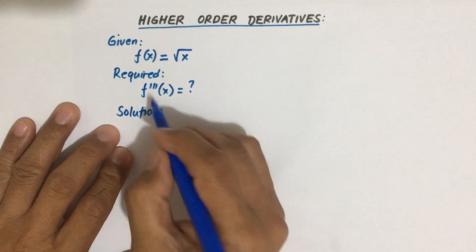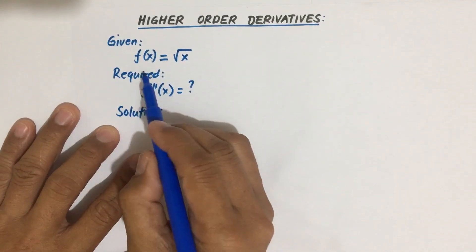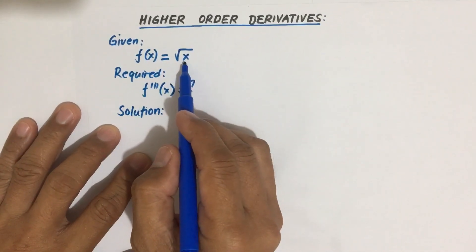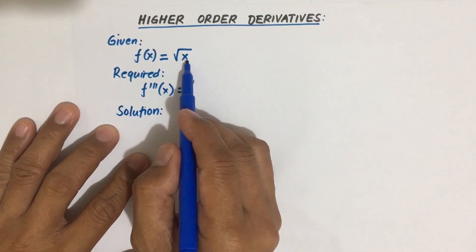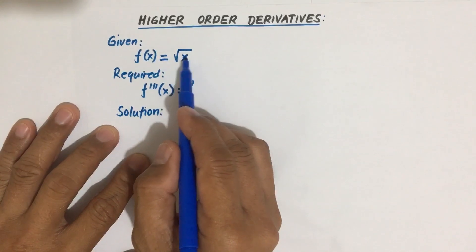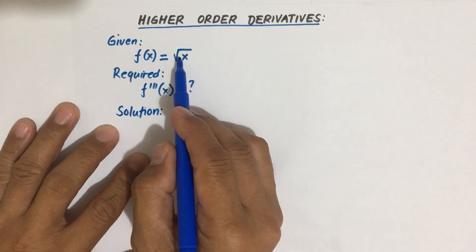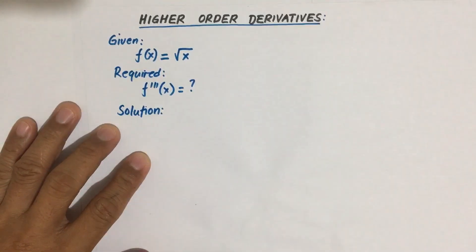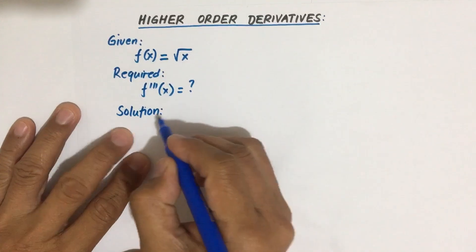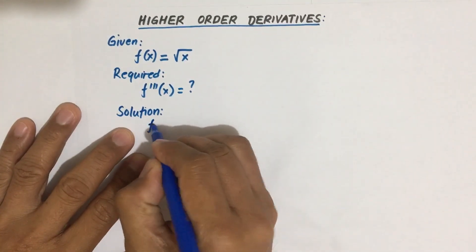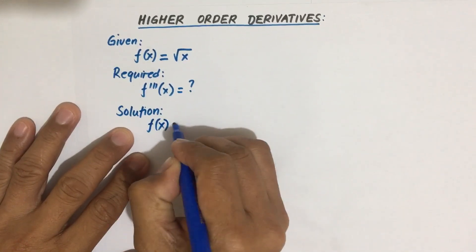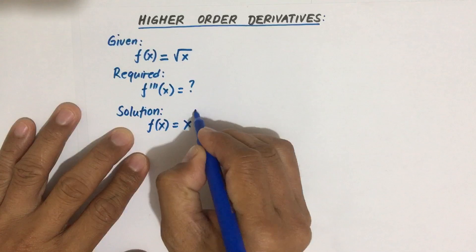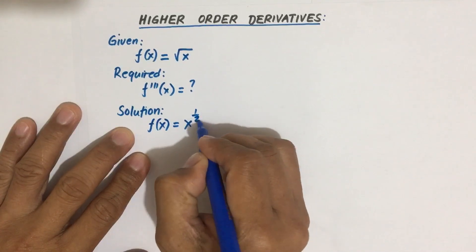First we need to transform this into x with an exponent. So we can write this as f(x) equal to x to the power one-half.